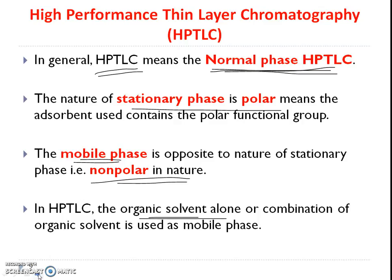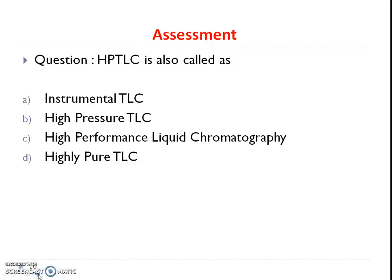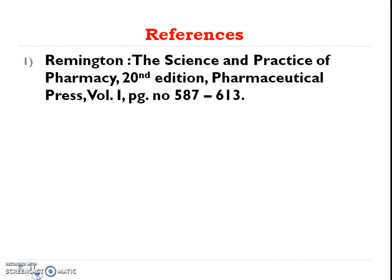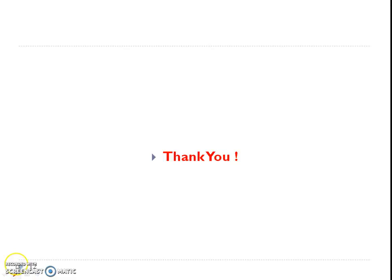Question for assessment: HPTLC is also called — (a) instrumented TLC, (b) high pressure TLC, (c) high performance liquid chromatography, or (d) highly pure TLC. For references, refer to Remington, PDCT, and the HPTLC book. Thank you.